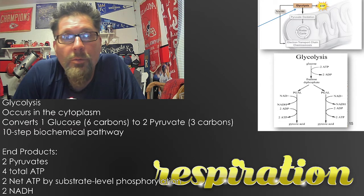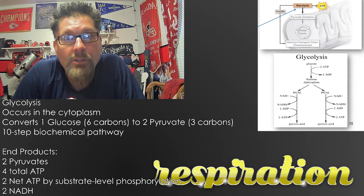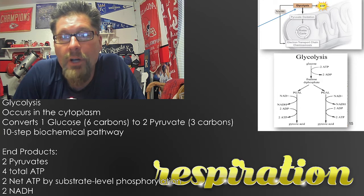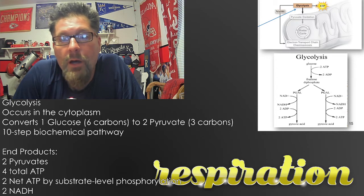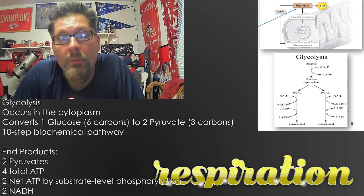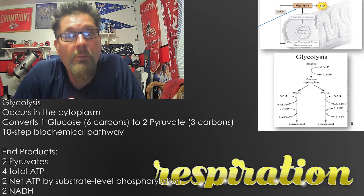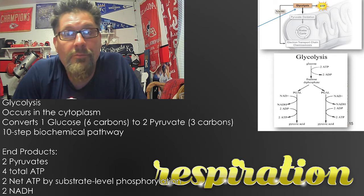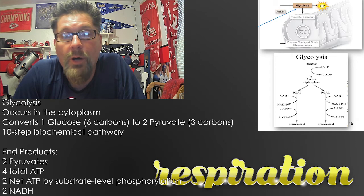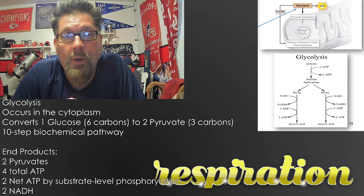We're also going to have two NADHs, so we'll see our first look at those electron carriers. Basically, two friends are going to come along and get two truckloads full of your stuff to help you move — those are the NADHs being made. For glycolysis end products, you want to be thinking twos: two pyruvates, two net ATP, two NADHs. These end products are important to essentially memorize because they are highly potential multiple choice questions.